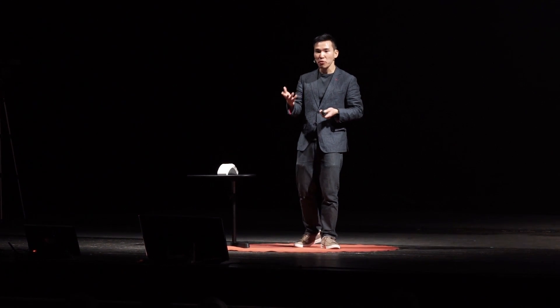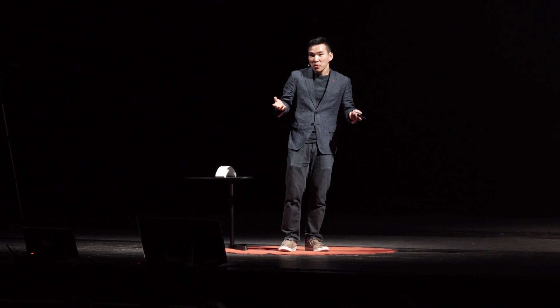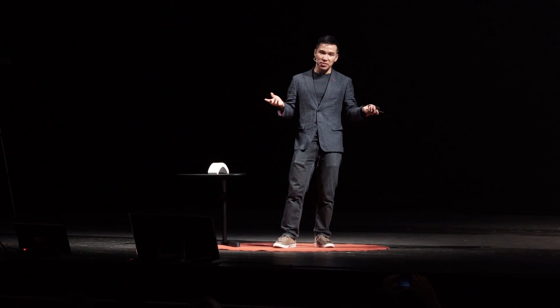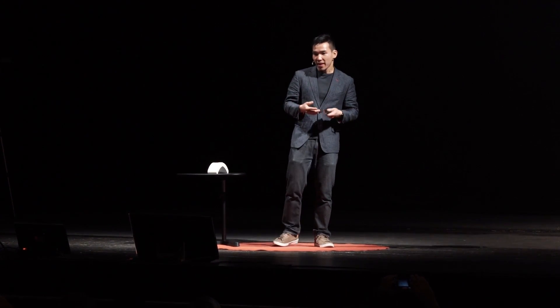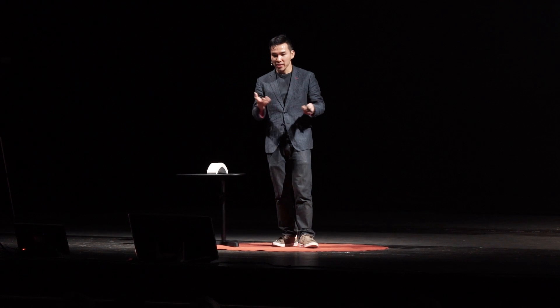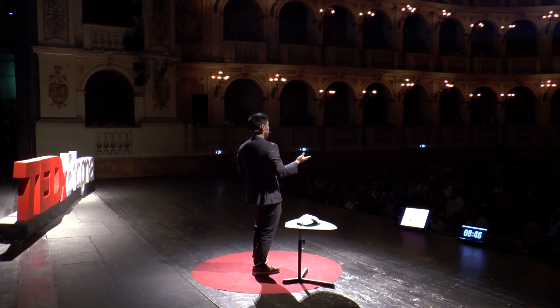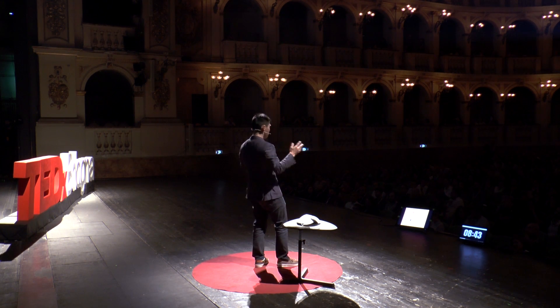For instance, we have programs that tell us who we should date, like Tinder, or what social media we should follow, whose lifestyle we should follow on Instagram. YouTube tells us what to watch and who to subscribe to. Amazon tells you what to buy, LinkedIn tells you where you should work, Facebook tells you what news to read and who you should be friends with. Apps like Yelp tell you where to eat, and Workday, Asana, or Slack tell you how you should be working. It's a very programmed loop that we are living in — you might be thinking free will is an illusion, and everything is being coded and scripted.